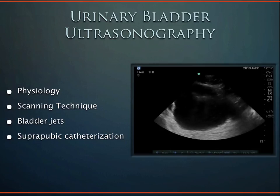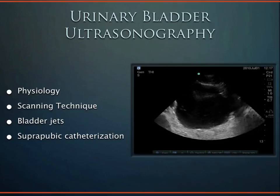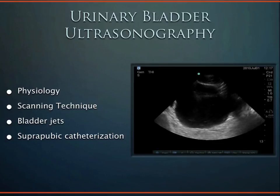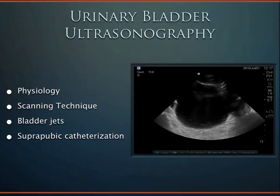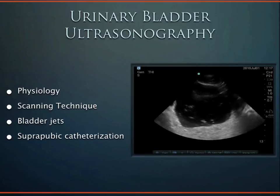Now we'll shift from the kidney to the bladder. We'll cover bladder physiology, scanning techniques, bladder jets — shown here as a grayscale image of the jet from the ureter into the bladder — and a clinical correlation involving suprapubic catheterization.